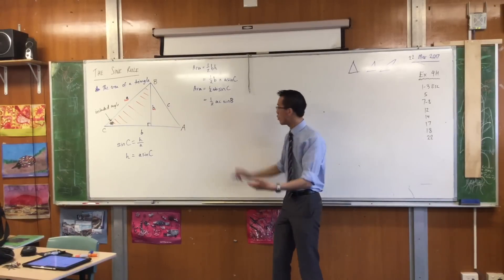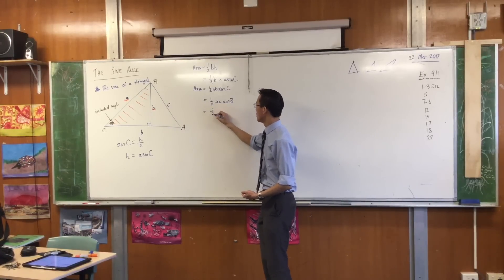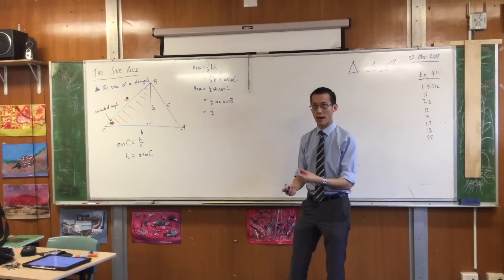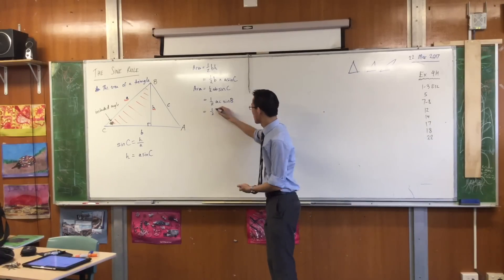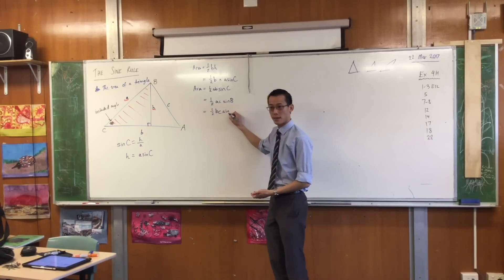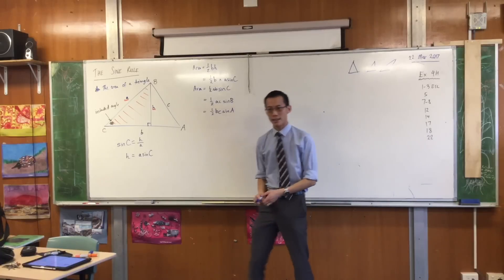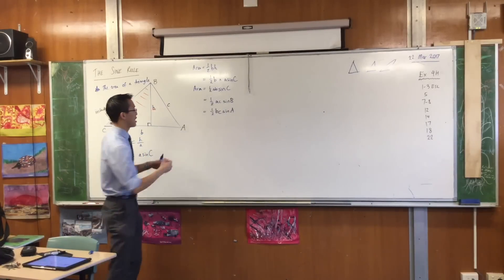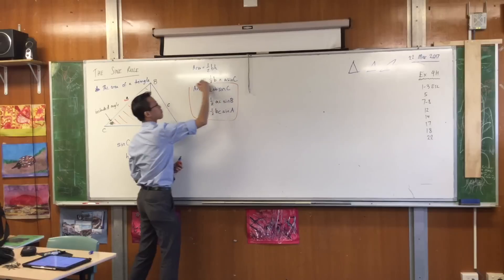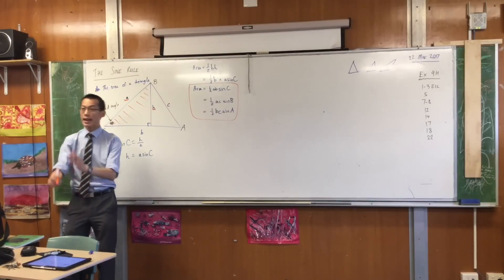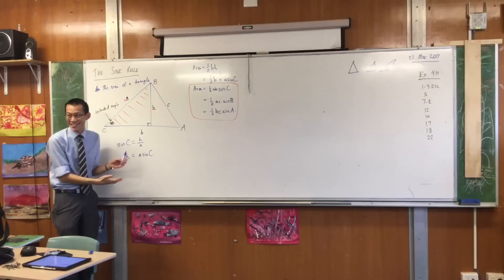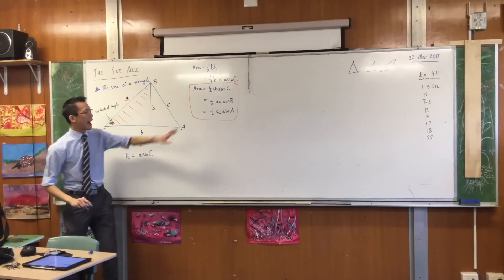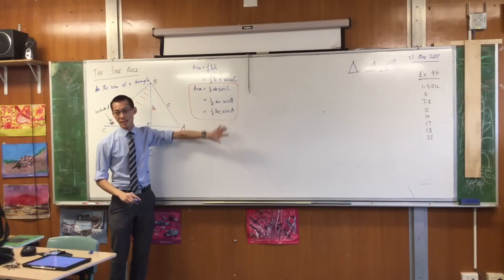And exactly the same way, I could say, well, if I didn't choose A and B, or A and C, the last combination is B and C. So if I chose that, then it would be sine A. Now this is important. This is the crucial step. If I can approach the area of a triangle in any of these three ways, and presumably it's the same triangle, so the area is the same, I can actually operate on all of these three things together. Watch.